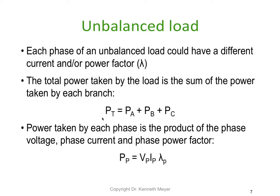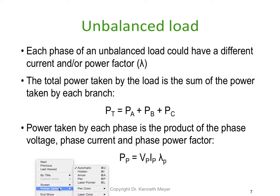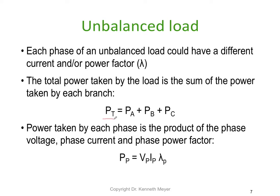What happens when the load is unbalanced? Each phase of an unbalanced load could have a different current and/or power factor, so our previous equation won't help. The total power taken by the load is the sum of the power in each branch. The total power is simply P_a + P_b + P_c. This method also works for a balanced load, but it's faster to use the previous equation.